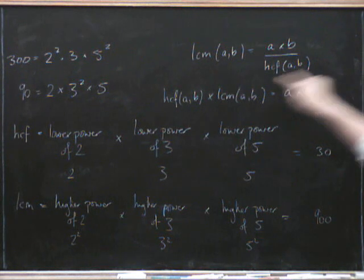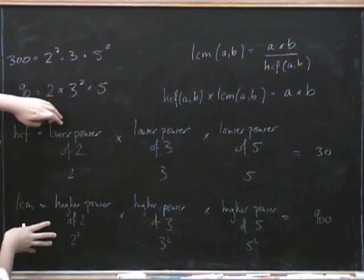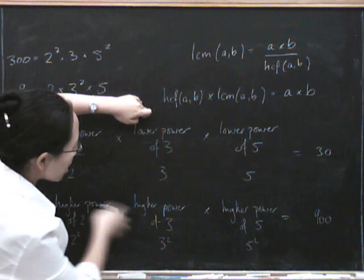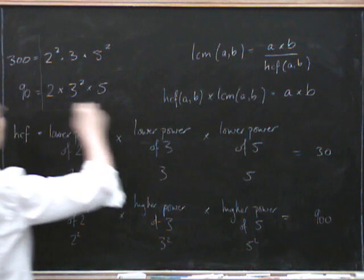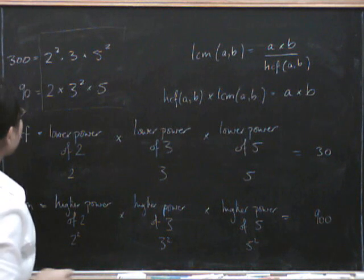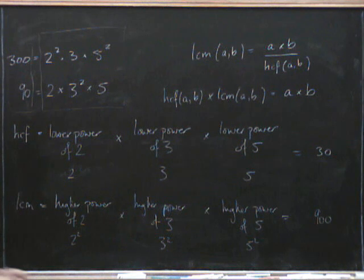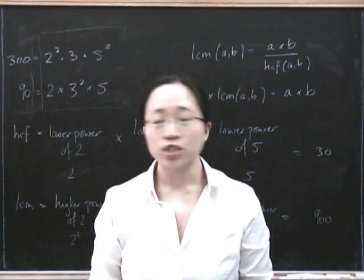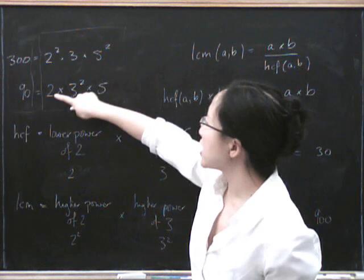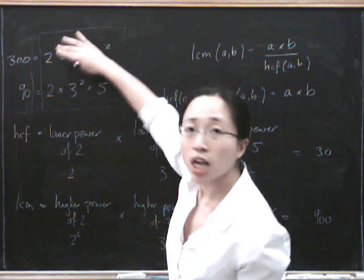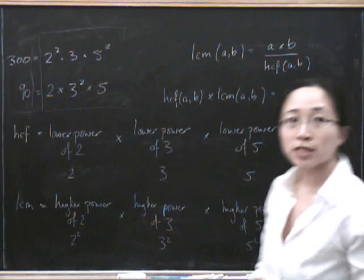Now let's see why HCF times LCM equals A times B. When we multiply the highest common factor by the lowest common multiple, we multiply together the lower power of 2 and the higher power of 2, the lower power of 3 and the higher power of 3, and the lower power of 5 and the higher power of 5. All we've done is multiplied all these numbers together, which is exactly the same as just multiplying the two original numbers together. This works no matter what prime factorizations we use: for HCF take the lower power of each prime, for LCM take the higher power — and the same relationship always holds. Thank you.